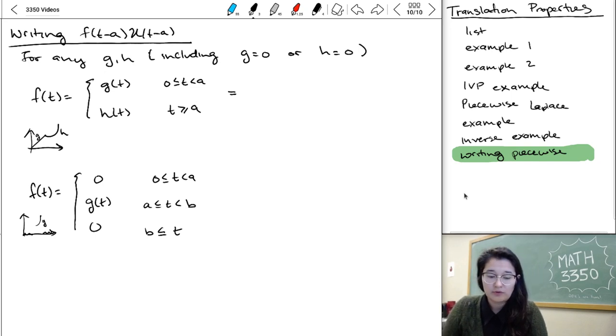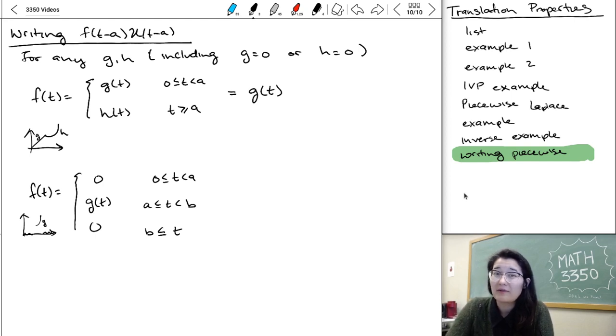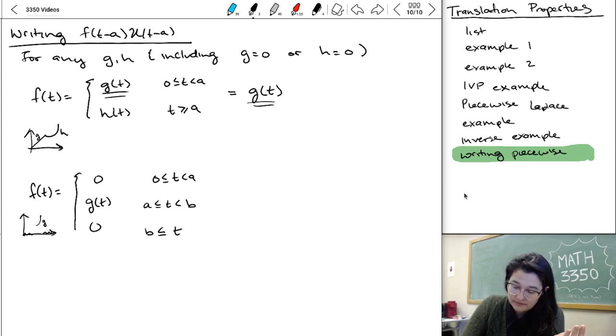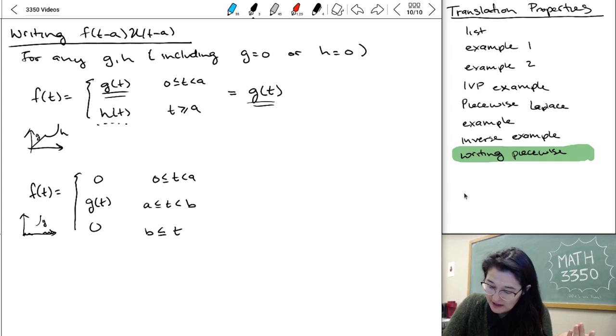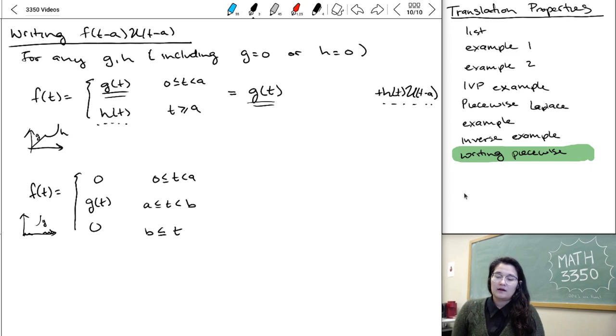So those cases we did before where it's zero something or something zero are gonna follow the format of this top example. And the way we're going to represent these are as follows. So F starts out being G. If I never passed T equals A, I would never know anything else but G. But then, later on, it becomes H, so I'm gonna have to add H of T times U of T minus A.